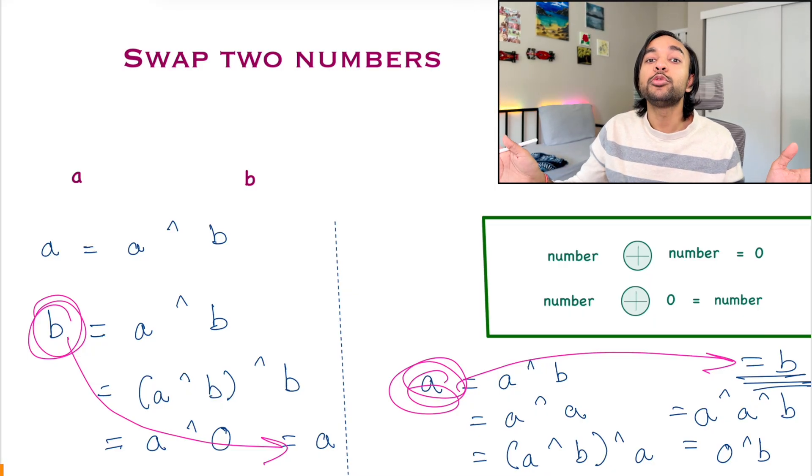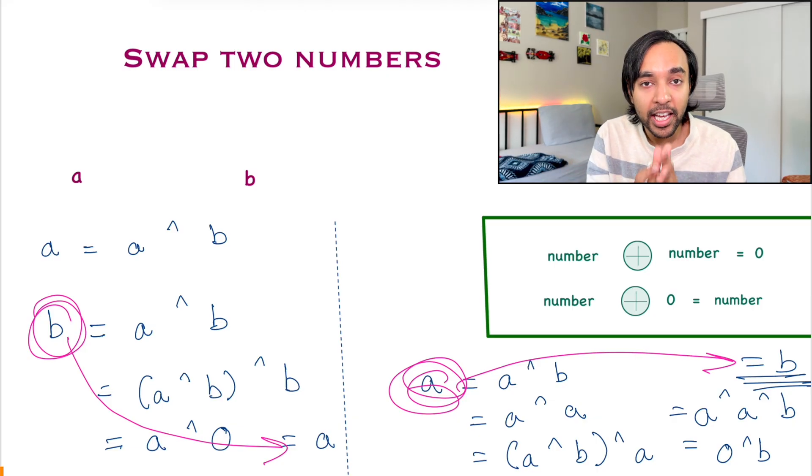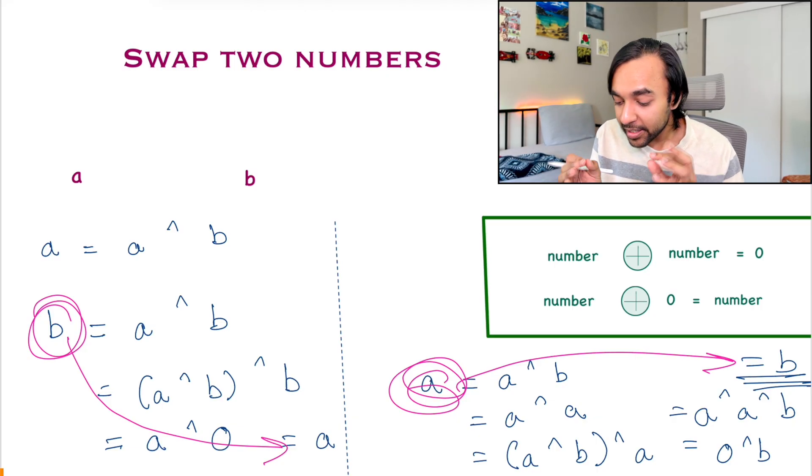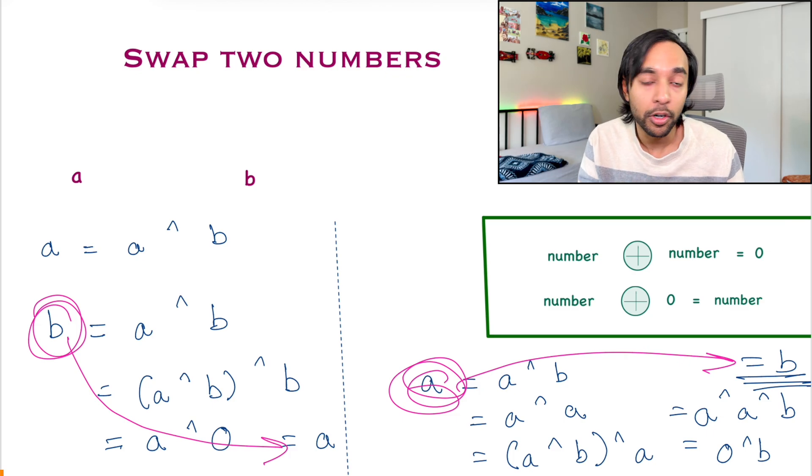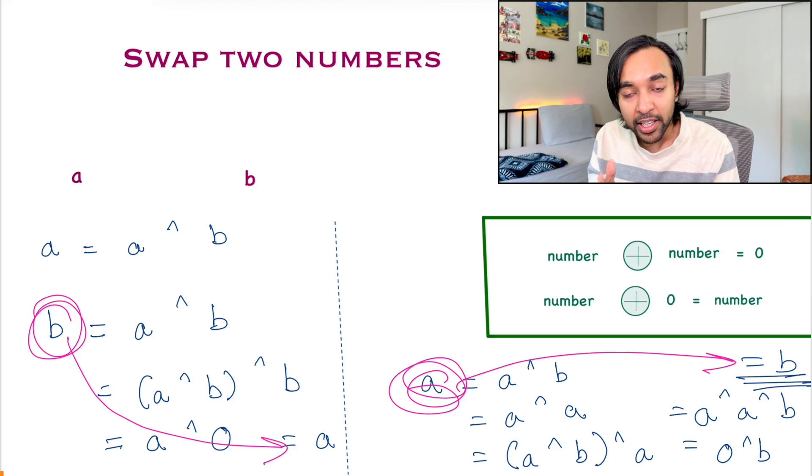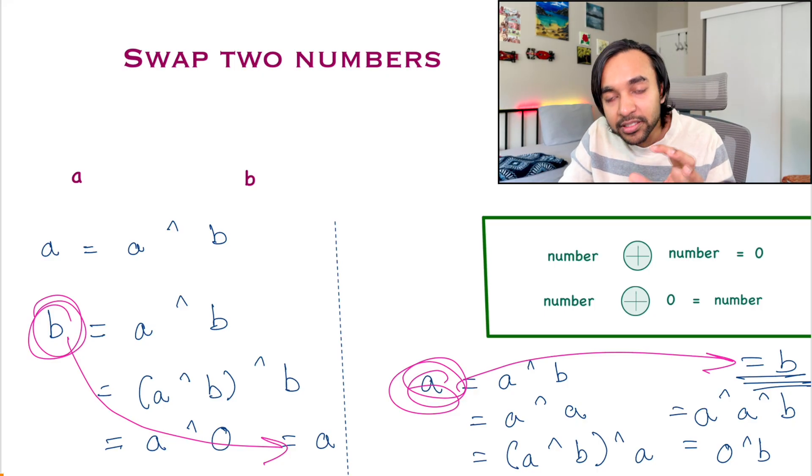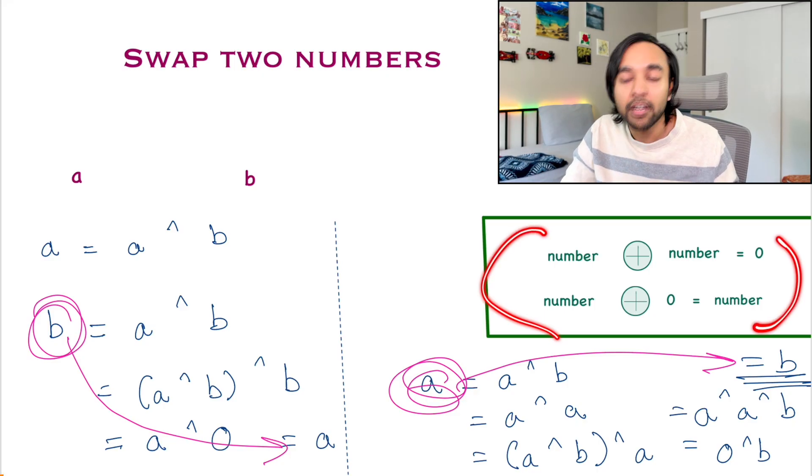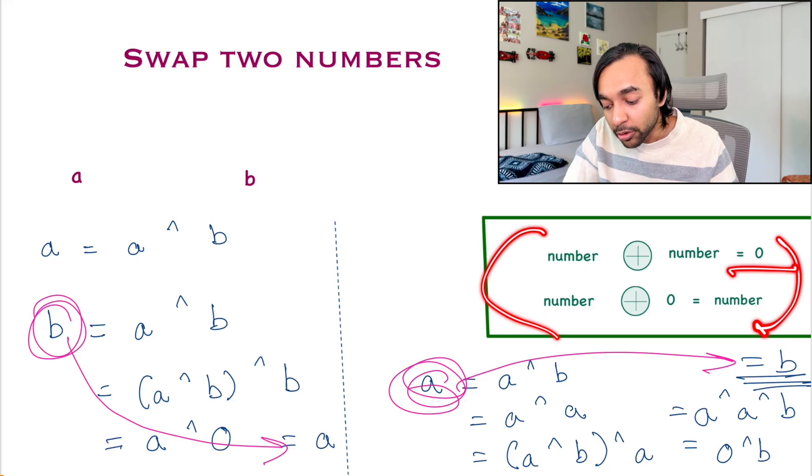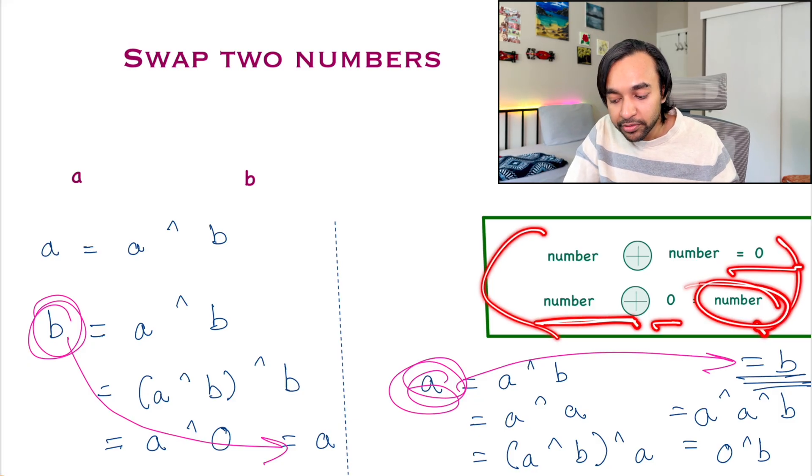So, just using this exclusive XOR operator, I was able to swap both of the numbers and I didn't even take the help of a third variable. This problem is really, really important. And, you might find it in telephonic interviews as well. And, how does it work? The underlying idea just remains the same. Any number when XORed with itself gives you a 0. And, any number when XORed with 0 gives you the number itself. It is very similar to how we took advantage of finding the unique number in an array when all the other numbers were duplicated. This is how exclusive XOR helps you a lot.